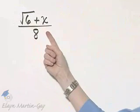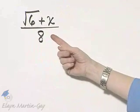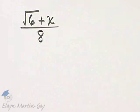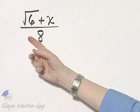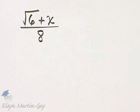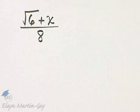Let's look at the following expression. Here is my expression, and we'd like to rationalize the numerator of this expression. Now, rationalizing the numerator simply means we want to write this as an equivalent expression, but without a radical in the numerator.